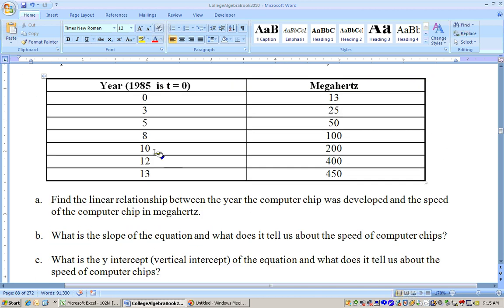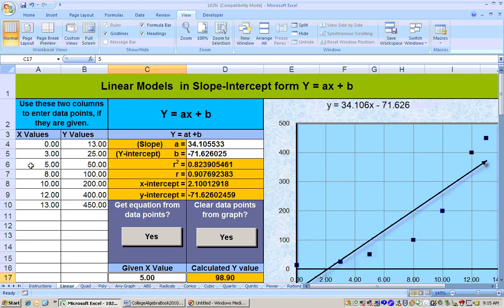It wants us to get the linear relationship, so I copied and then pasted special as text this data into the linear sheet, and then I clicked the get equation from data points button, and I got my equation here: y equals 34.106x minus 71.626.